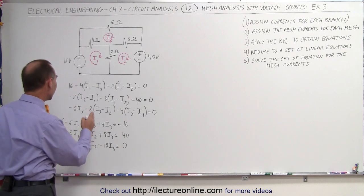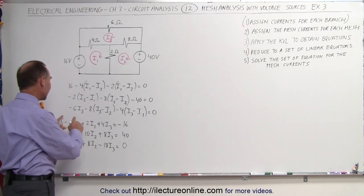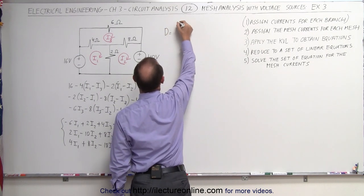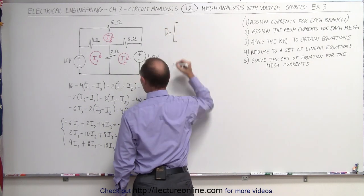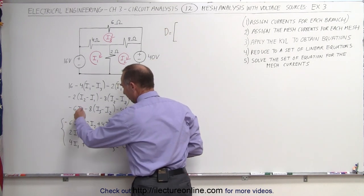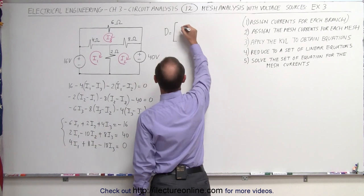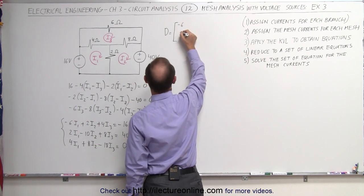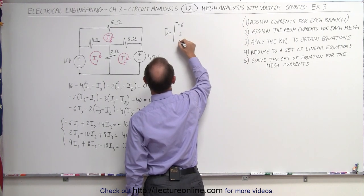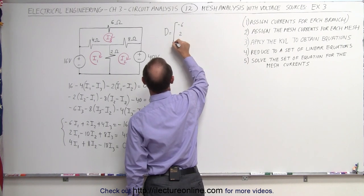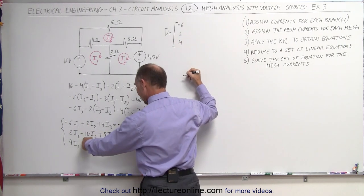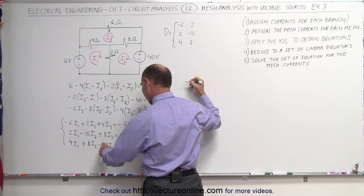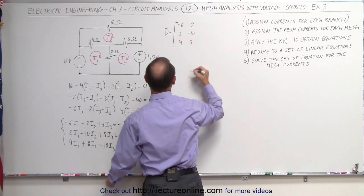Now we can go ahead and solve for that by first getting the determinant. D is equal to — what we do here is write the matrix with the coefficients of I1, I2, and I3. We get minus 6, 2, and 4 in the first row; 2, minus 10, and 8 in the second row; and 4, 8, and minus 18 in the third row.